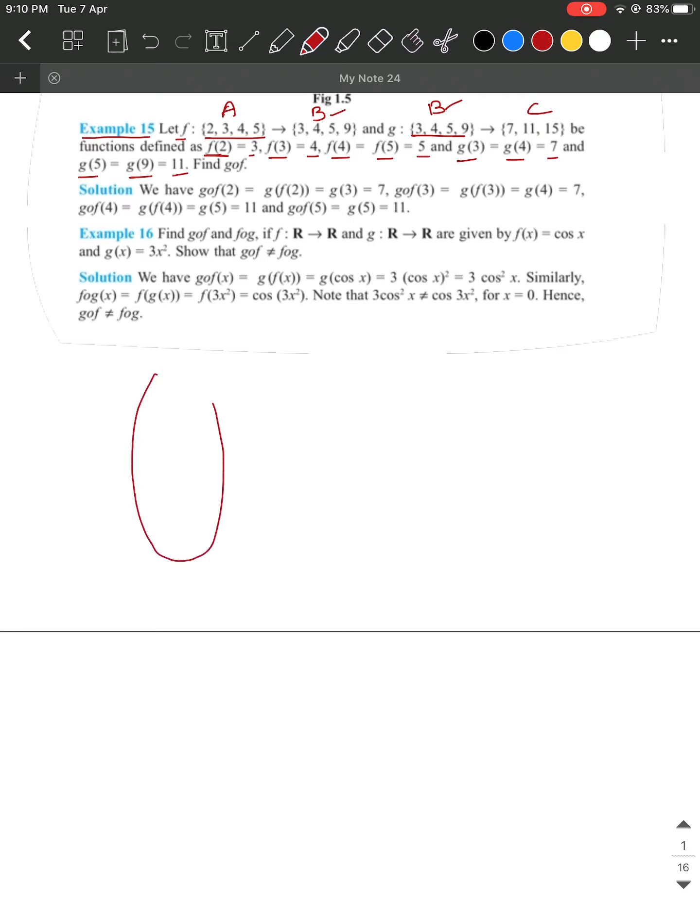Let us approach it diagrammatically. If you have set A, set B, and set C. Set A has the elements 2, 3, 4, 5. Set B has the elements 3, 4, 5, 9. Set C has the elements 7, 11, and 15.